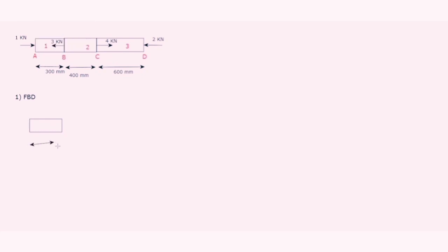Starting with step one — the free body diagram. We name the members: number one is AB, number two is BC, and number three is CD. For the FBD of the first member AB, the length is 300 mm. We consider the leftmost force, which is 1 kN acting towards the body. In the FBD, show 1 kN force on both sides acting towards the body.